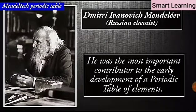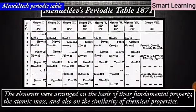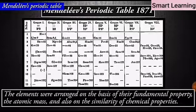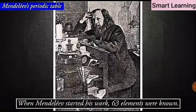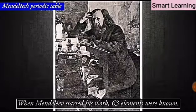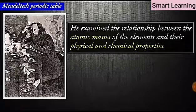He was the most important contributor to the early development of a periodic table of elements, wherein the elements were arranged on the basis of their fundamental property, the atomic mass, and also on the similarity of chemical properties. When Mendeleev started his work, 63 elements were known. He examined the relationship between the atomic masses of the elements and their physical and chemical properties.